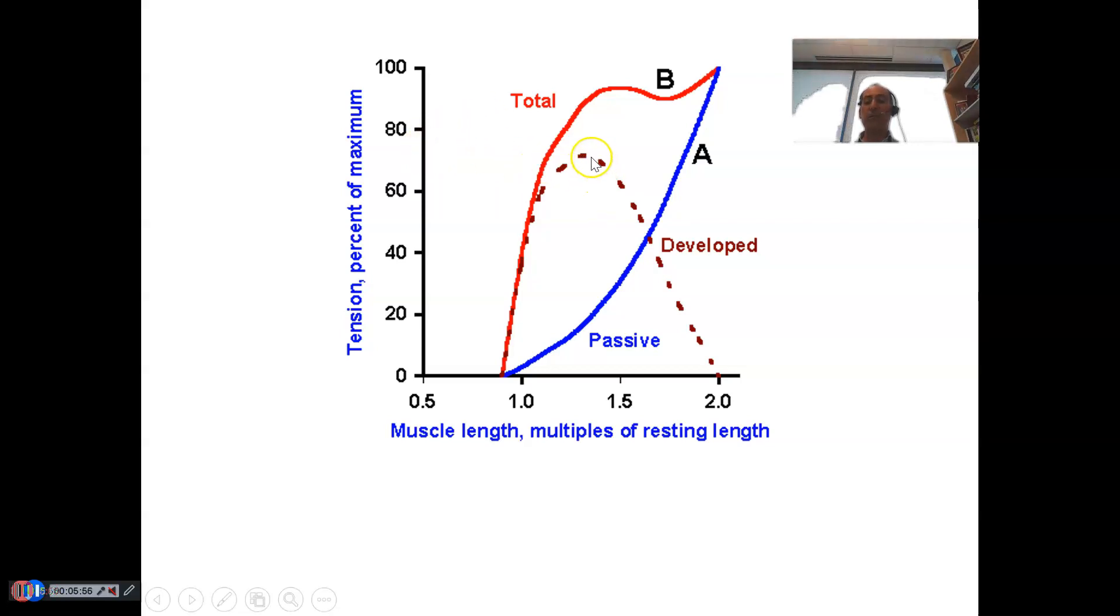So if you only use the sarcomere's potential, you're only ever going to use 75% of your total strength potential. In order to get to 100%, you need to involve this explosive or elastic recoil part, which is this passive amount here. And if you add the two together, the blue line and the dotted brown line, you ultimately get the red line.